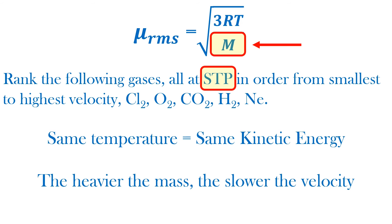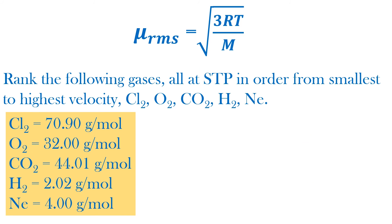Let's find the molar masses. Here are the molar masses for the gases. Chlorine is the heaviest, thus the slowest gas.